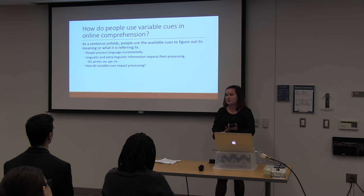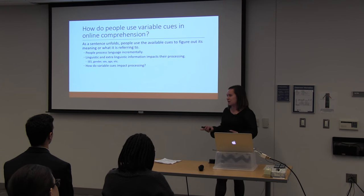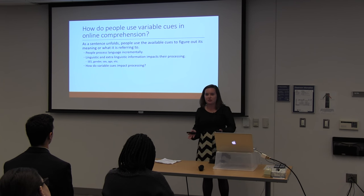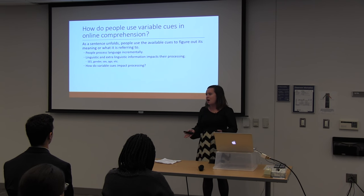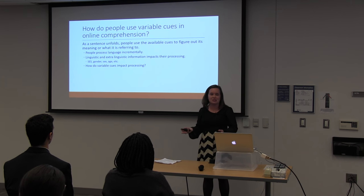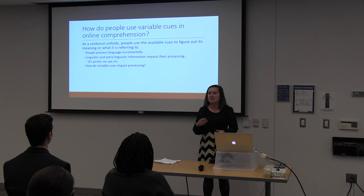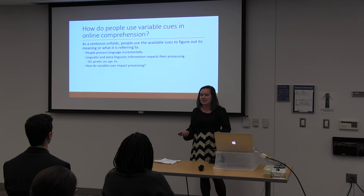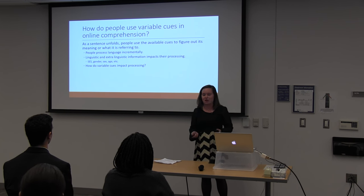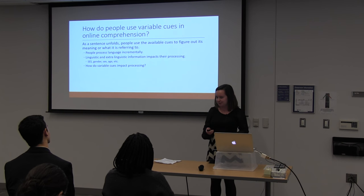For example, sex, gender, age, and SES are some of the cues that could affect processing. As a young woman in college, what I'm trying to say next — you might be thinking differently than if it was a professor up here speaking. So once again, I'm asking the question: how do these variable cues impact processing?